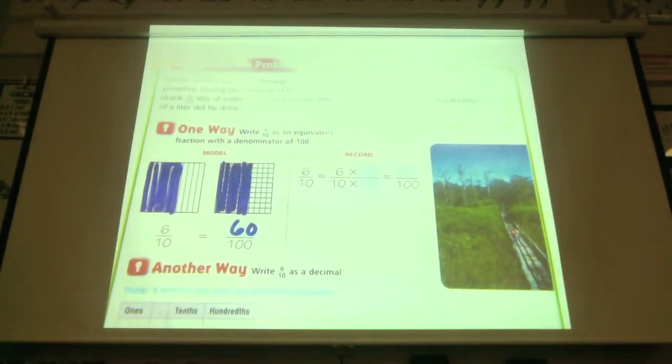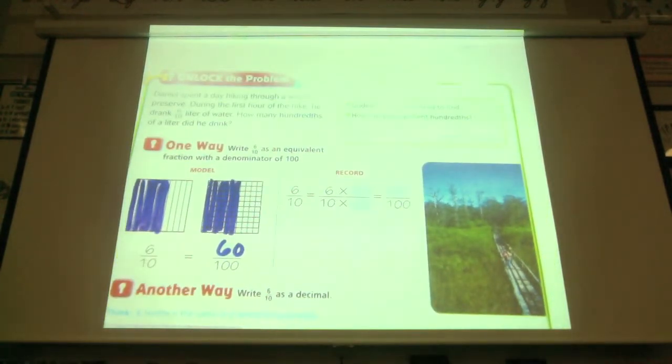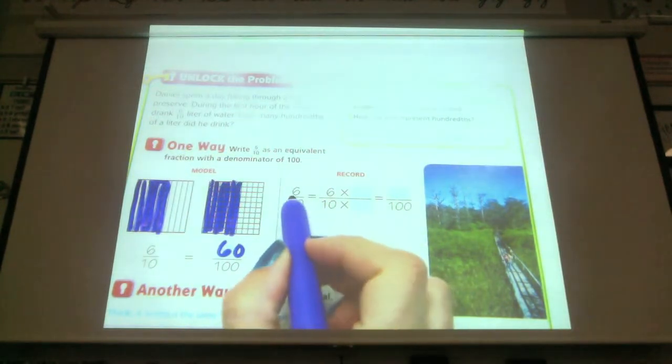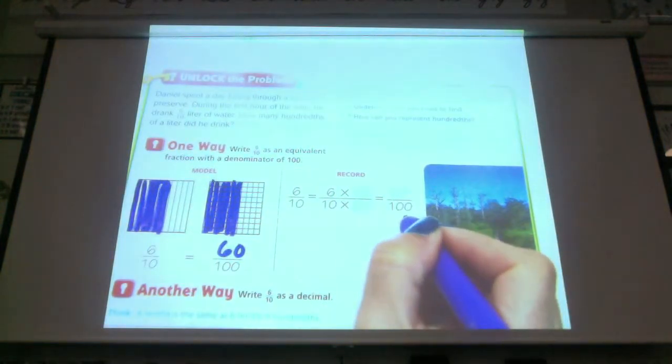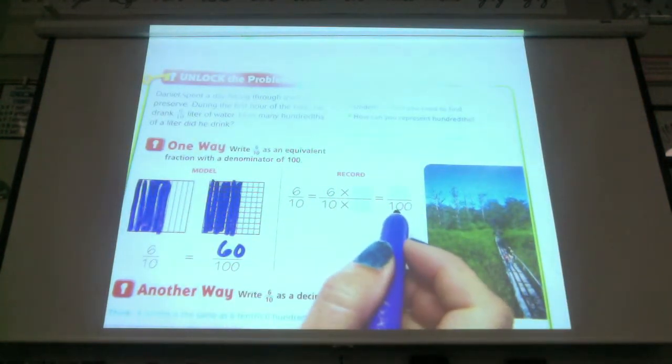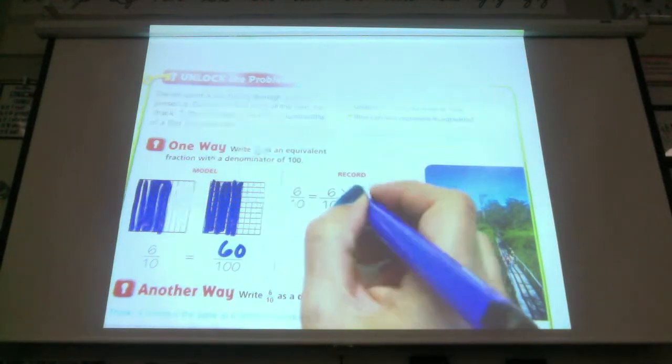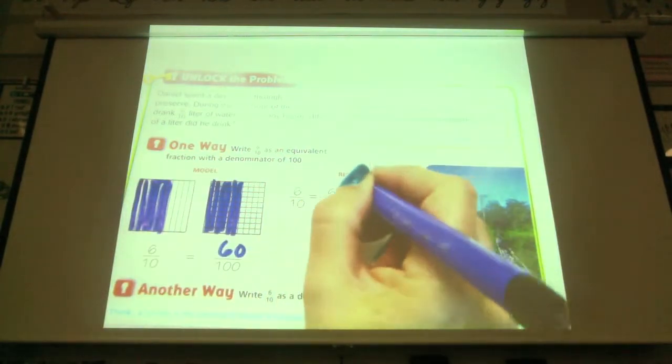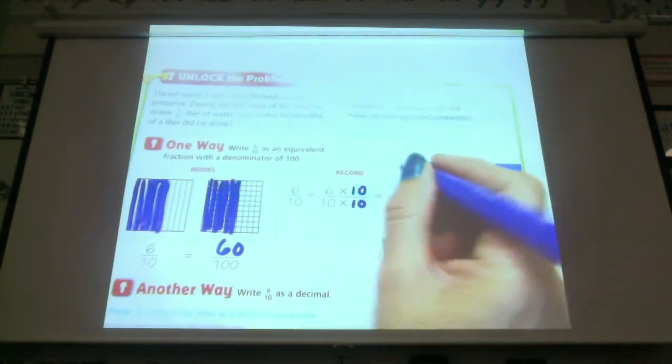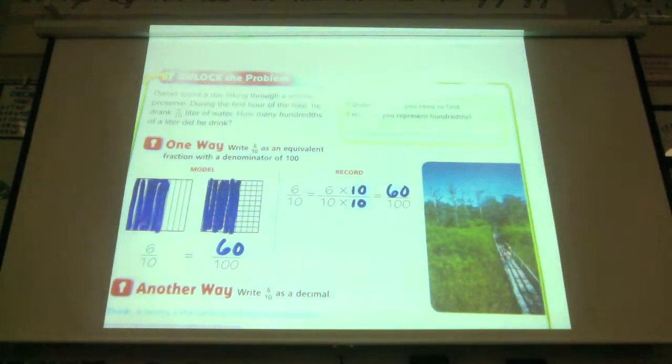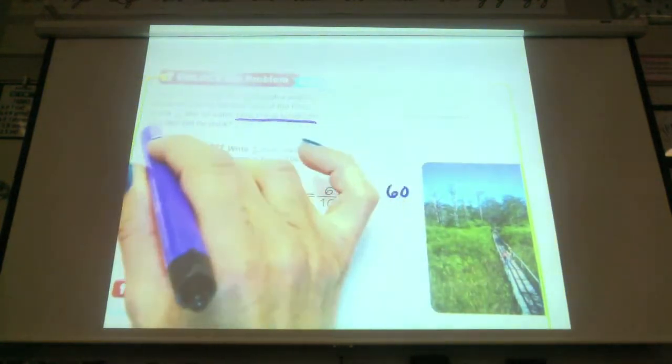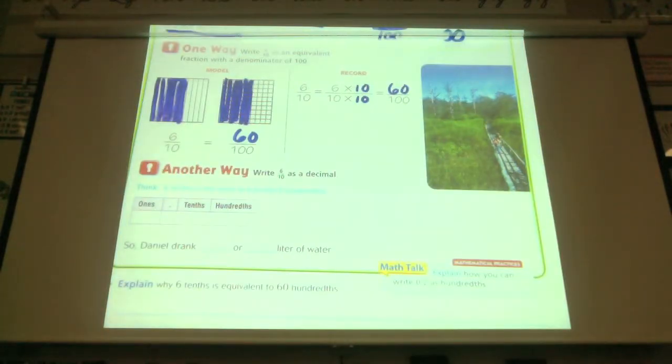"Pencils are down, eyes are up here. Let's look at how we do this with the fraction itself. We have six-tenths. We are going to hundredths. What number do I multiply ten by to get to a hundredth, class? Ten." The teacher explains: "If I multiply the denominator by ten, I have to multiply the numerator by ten. So six times ten is sixty hundredths. We needed to find how many hundredths of a liter did he drink."